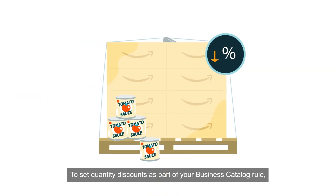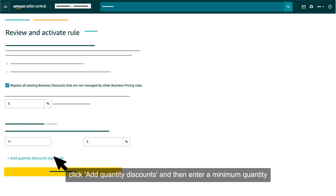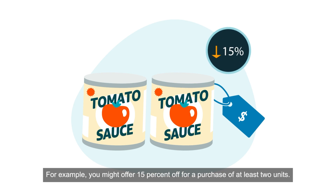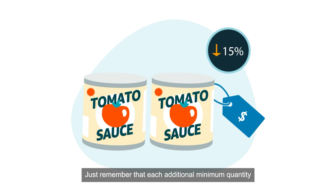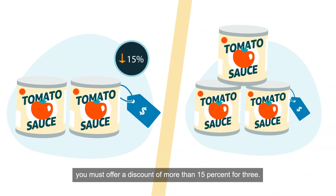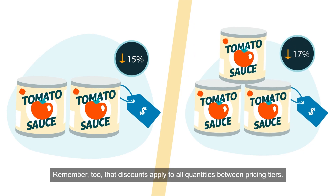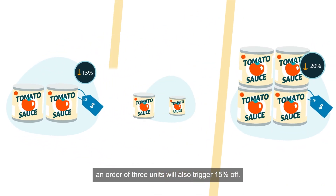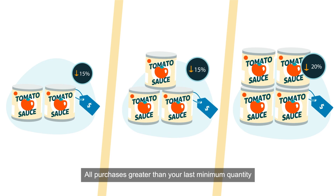To set quantity discounts as part of your business catalog rule, click Add Quantity Discounts and then enter a minimum quantity that will trigger each bulk discount, as well as a corresponding percent off. For example, you might offer 15% off for a purchase of at least two units. Each additional minimum quantity and percent off must be greater than the last — if you offer a 15% discount for two units, you must offer more than 15% for three. Discounts apply to all quantities between pricing tiers: if you enter 15% for two units and 20% for four, an order of three units will also trigger 15% off. All purchases greater than your last minimum quantity will receive your largest discount.